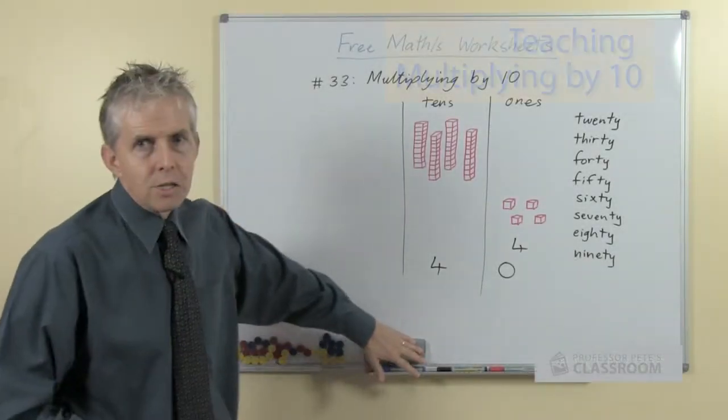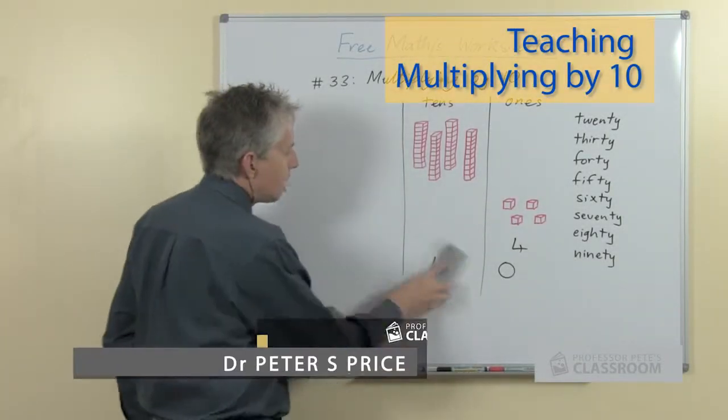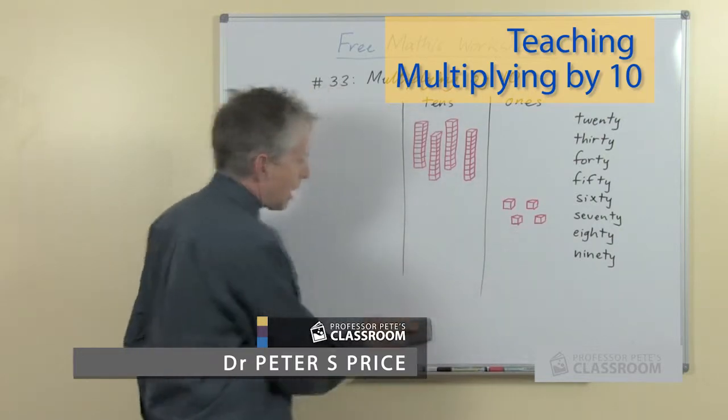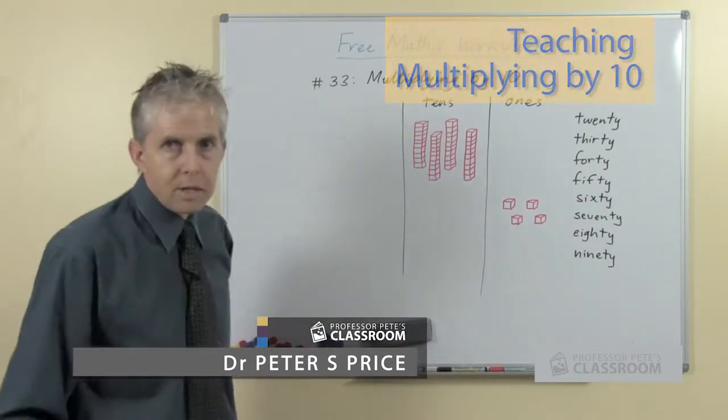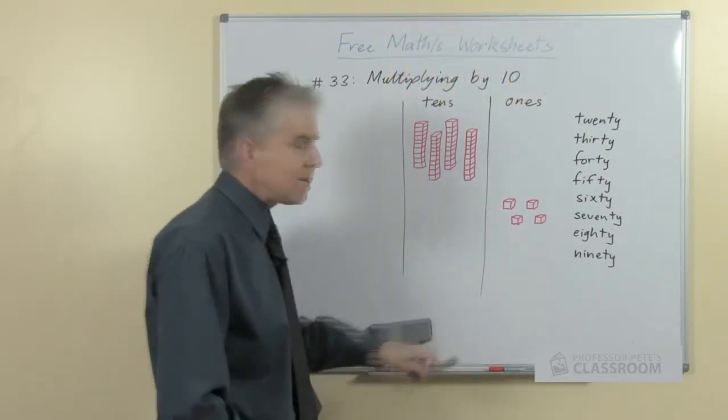This is the second strategy. We've already covered doubles, and now multiplying by 10 is the next easiest strategy.